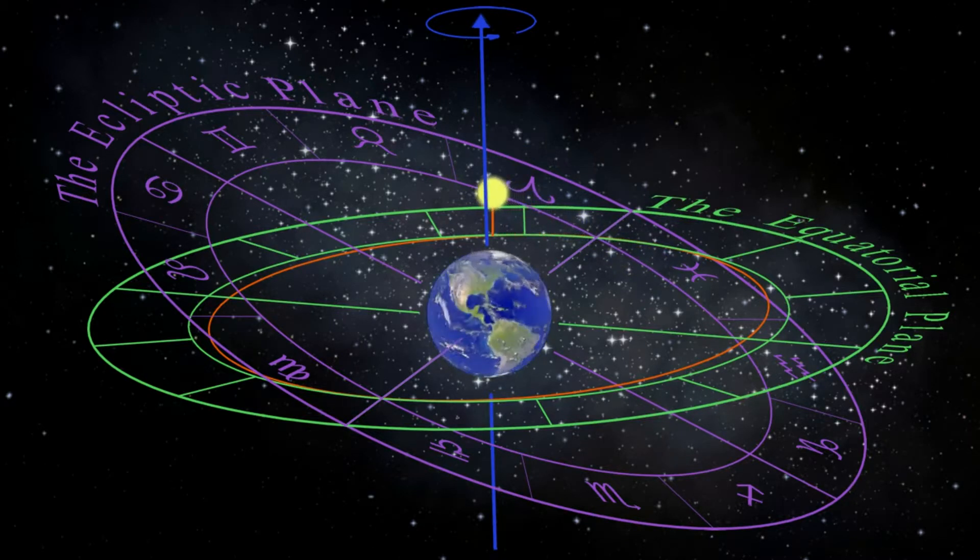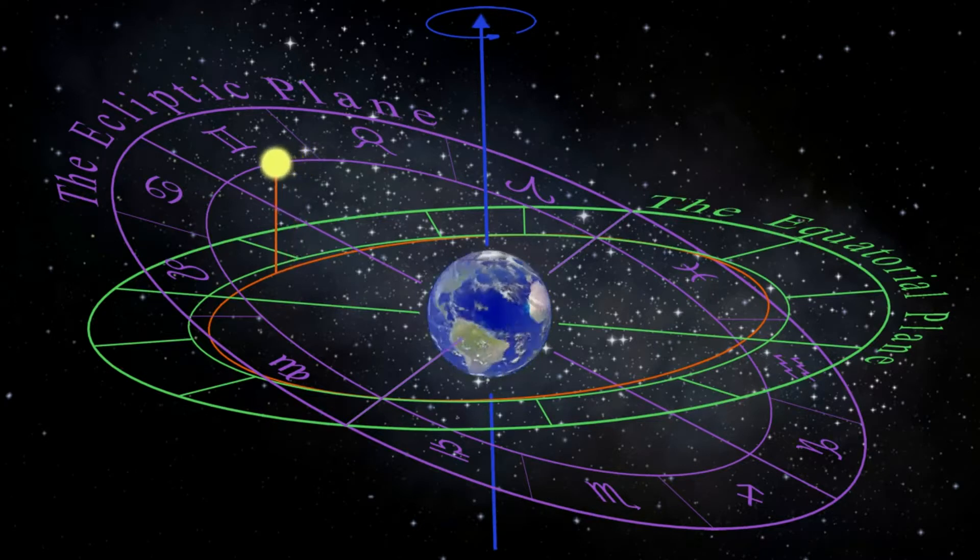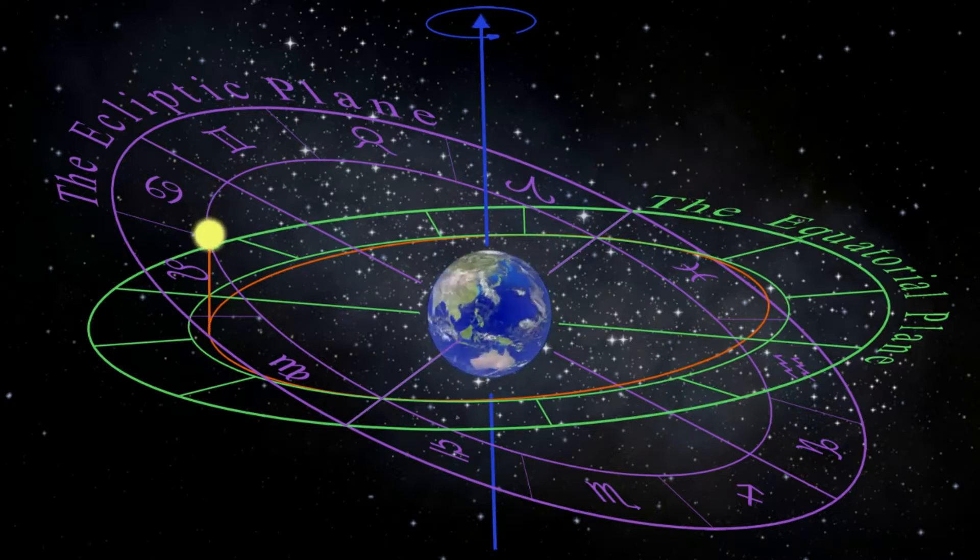When the existence of genes and DNA were discovered, they seemed to confirm Darwin's idea and contradict Lamarck's. However, now that we have discovered epigenetics, I think we can see that the truth is a combination of both Darwin's and Lamarck's ideas.